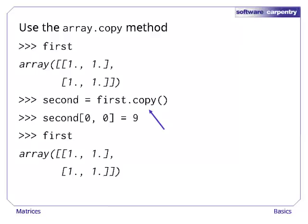If we really want a copy of the array so that we can make changes without affecting the original data, we can use the copy method. As this example shows, we can now overwrite the data that second points to without affecting the data pointed to by first.